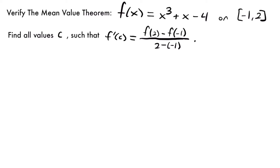The first thing we want to do to verify the mean value theorem is to check continuity and differentiability on our interval. Differentiability only applies to the numbers between the endpoints — that's why we have the open interval — so you don't have to worry about the endpoints, just the points in between. But continuity is needed for the entire closed interval including the endpoints. Is this function continuous? The things that make a function not continuous would be breaks or gaps, most common in rational functions where the denominator causes issues. Since x³ + x − 4 is a polynomial, there are no undefined values on this interval. So continuity: check.